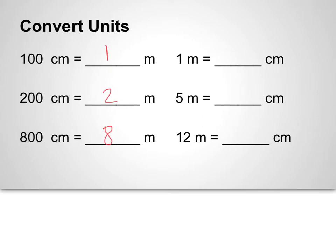We can also convert units the other way. If I have 1 meter, I know that I have 100 centimeters. If I have 5 meters, I know that I have 500 centimeters — 5 meters equals 500 centimeters. If I have 12 meters, I know that there are 100 centimeters in every meter, so that means that I have 1,200 centimeters.